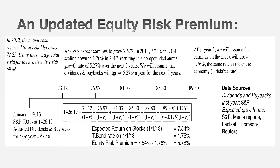500 largest market cap stocks. Instead of coupons, what do you hope and pray you'll get? You hope and pray you'll get some cash flows. Those cash flows will take the form of either dividends, and with U.S. companies, some buybacks.